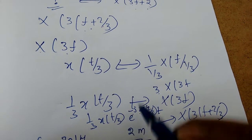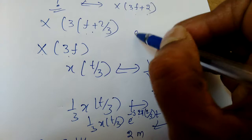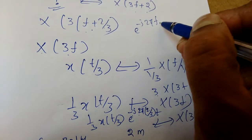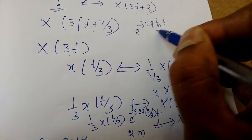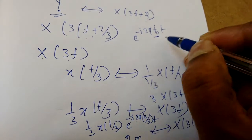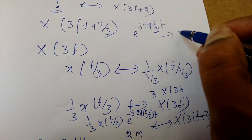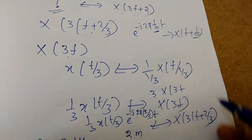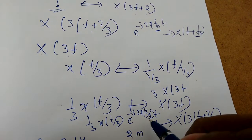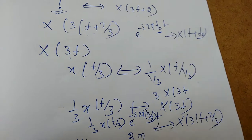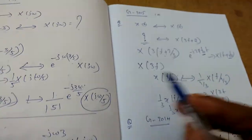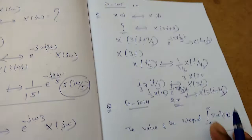So it is e^(−j2πf_naught·t), with f_naught = 2/3. X(f + f_naught) requires f_naught = 2/3, so we place 2/3 in the expression. This is how to apply the scaling and shifting properties together.